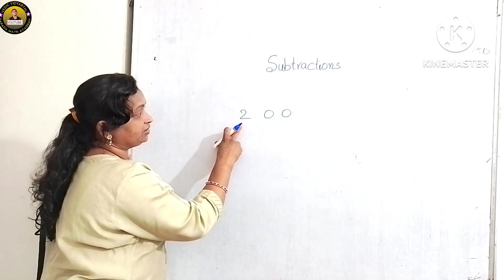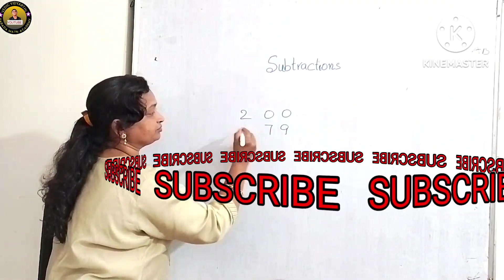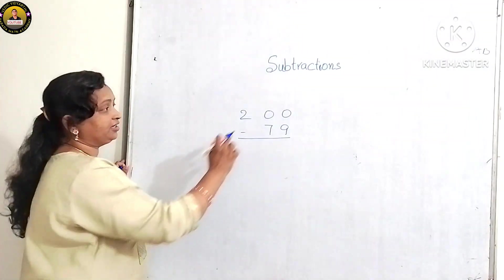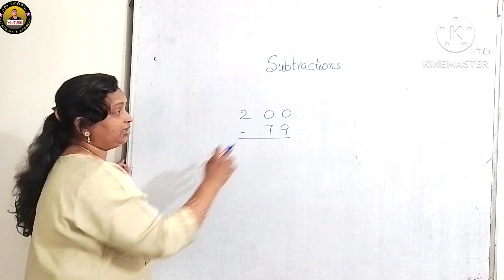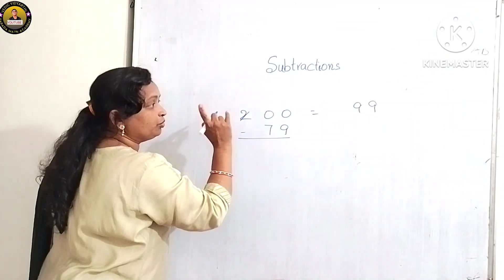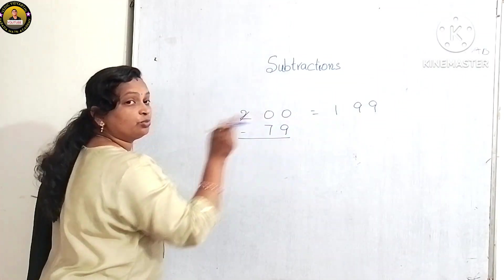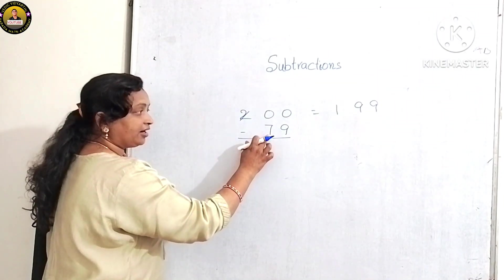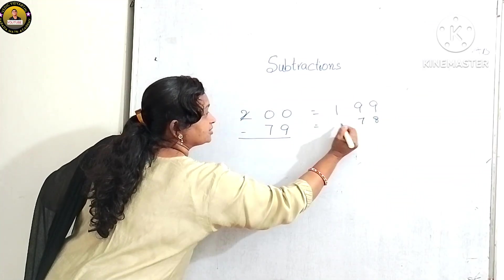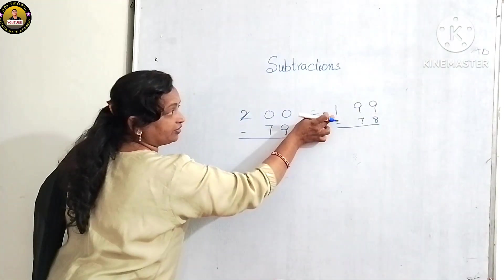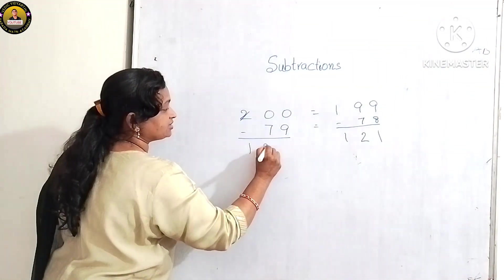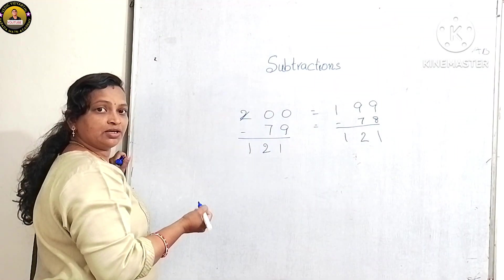Now observe: 200 minus 79. Check how many zeros are there — two zeros, so two nines: 99. The predecessor of 200 is 199. The predecessor of 79 is 78. Subtract: 9 minus 8 is 1, 9 minus 7 is 2. The final answer is 121.